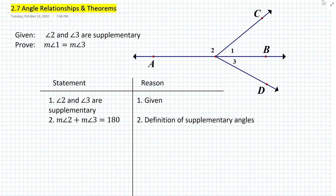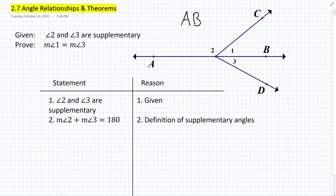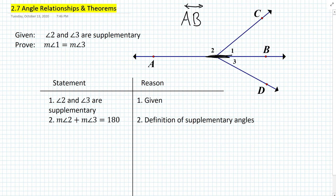So what can we do next? We want to prove that measure of angle 1 is equal to measure of angle 3. In the diagram, we know that we have line AB, and we can assume that is actually a straight line. Normally, that should also be stated in the givens — line AB is a given. So what does that tell us? That this is a straight line. If we have a straight line and two adjacent angles, what can we say about those two angles?